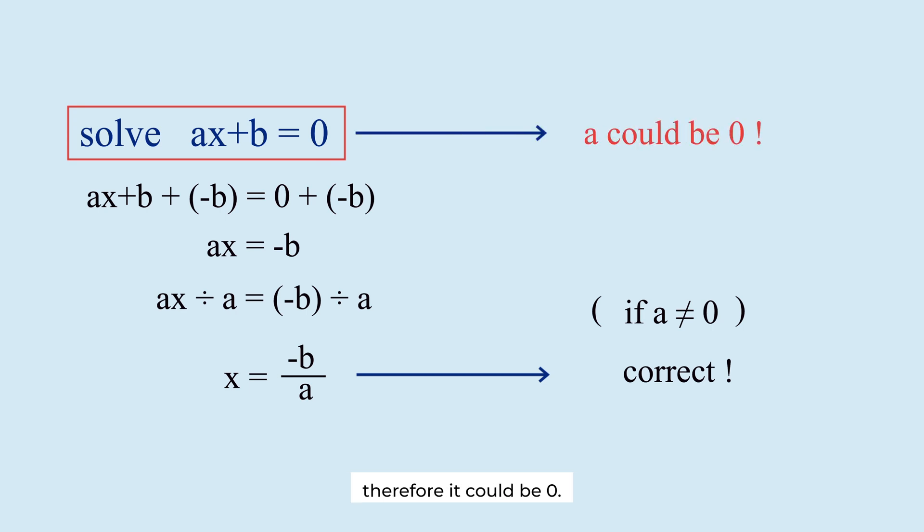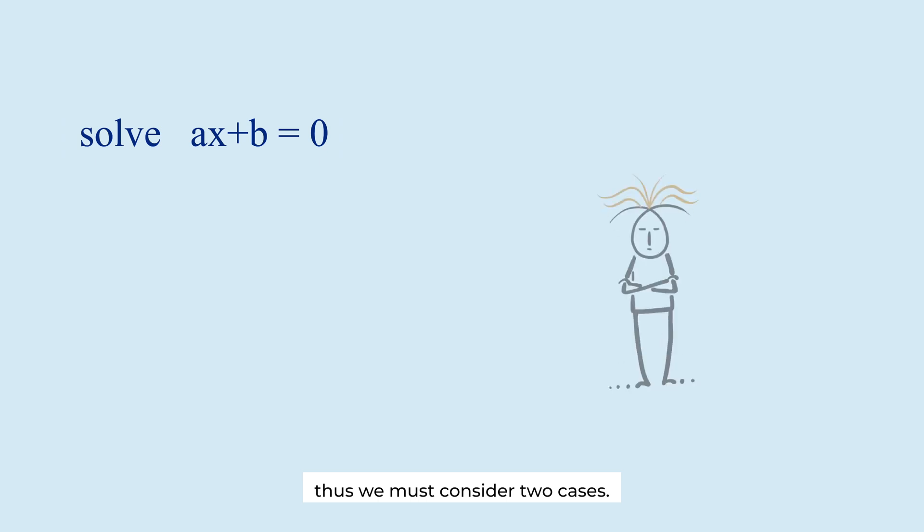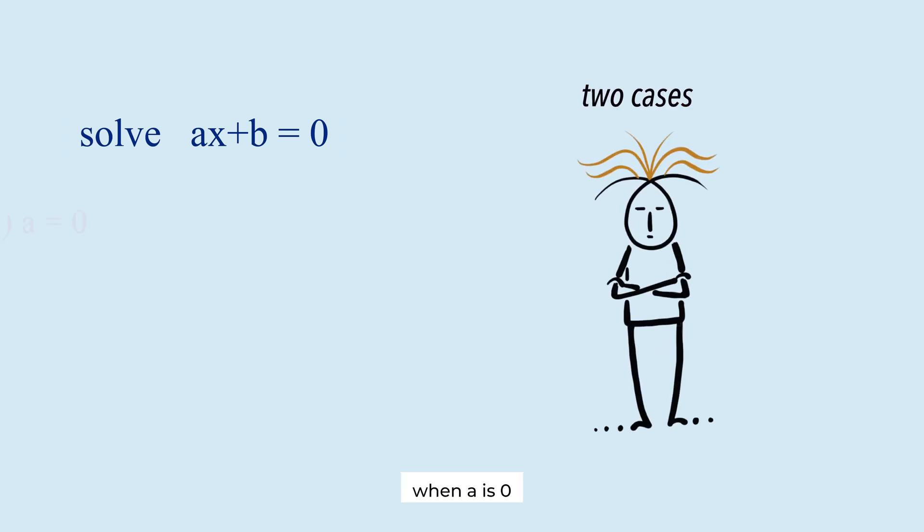Therefore, a could be 0. Thus, we must consider two cases: when a is 0 and when a is not 0.